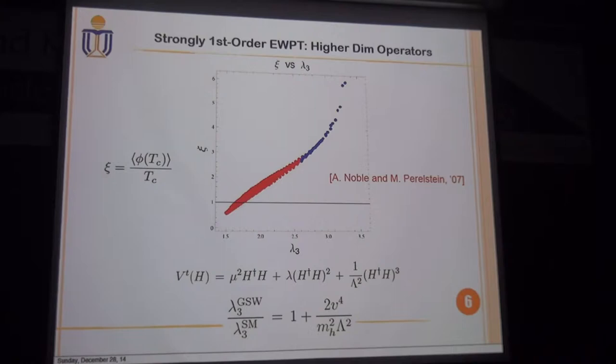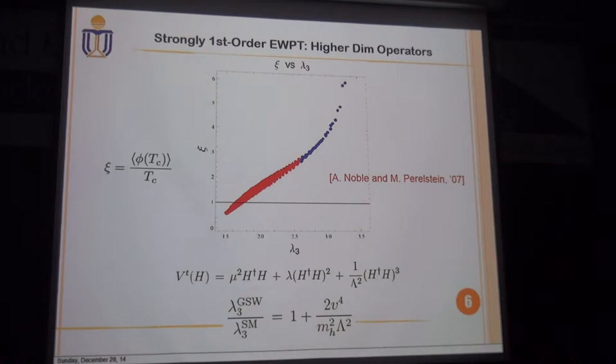Is lambda still perturbative? Lambda is a cutoff — lambda_3. Still perturbative? Yes, we have a loop factor suppression, so certainly it is. But the value is so big. And if we go to high energy scales, there potentially exists a Landau pole problem, but that is beyond the discussion here. I'm saying that the usual criterion is lambda_3 squared divided by 4pi should be less than 1. Oh, so this is not the absolute value — this is a ratio. Yes, this is a ratio of the tri-Higgs coupling and its standard model value. Sorry, this definition is not so clear here.